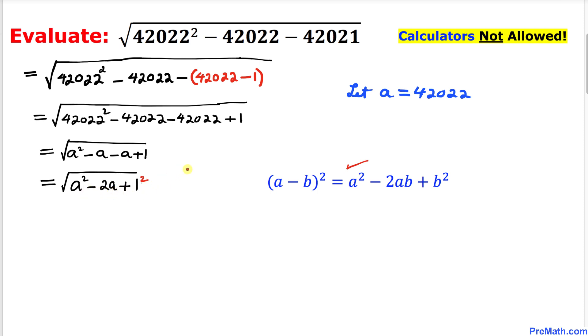So that means this radicand is a perfect square. So this could be written as a minus 1 whole squared. Therefore, we can write this one as square root of (a minus 1) whole squared.